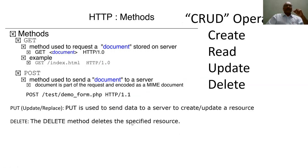Now let us understand what other methods HTTP supports apart from the GET method. Basically there are four main HTTP methods: the first is called GET, the second is called POST, the third is called PUT, and the fourth is called DELETE. Of course there are other methods too, but as a beginner you should first understand these four.